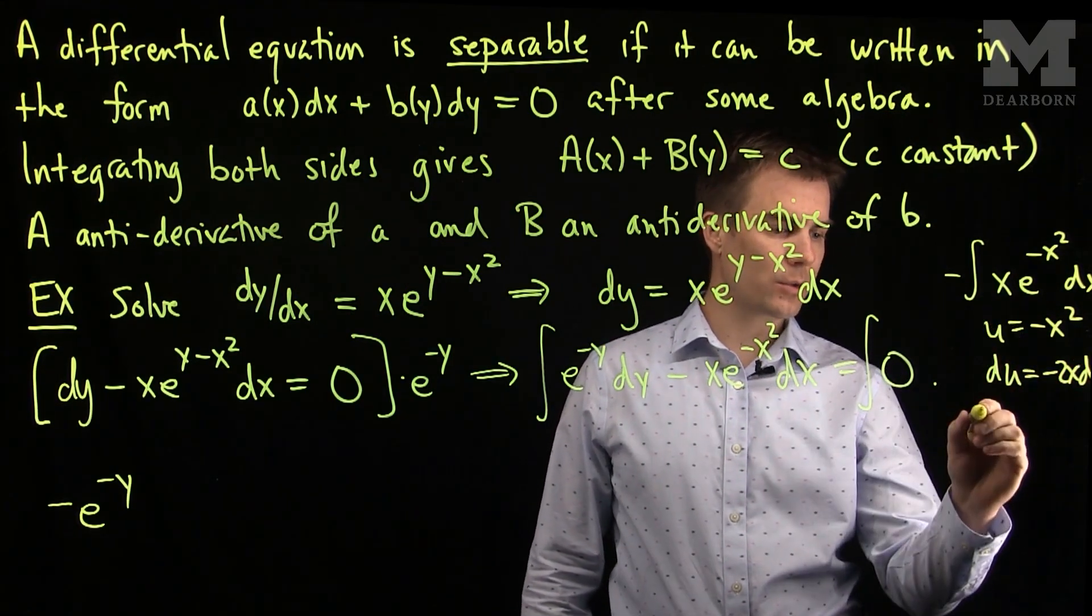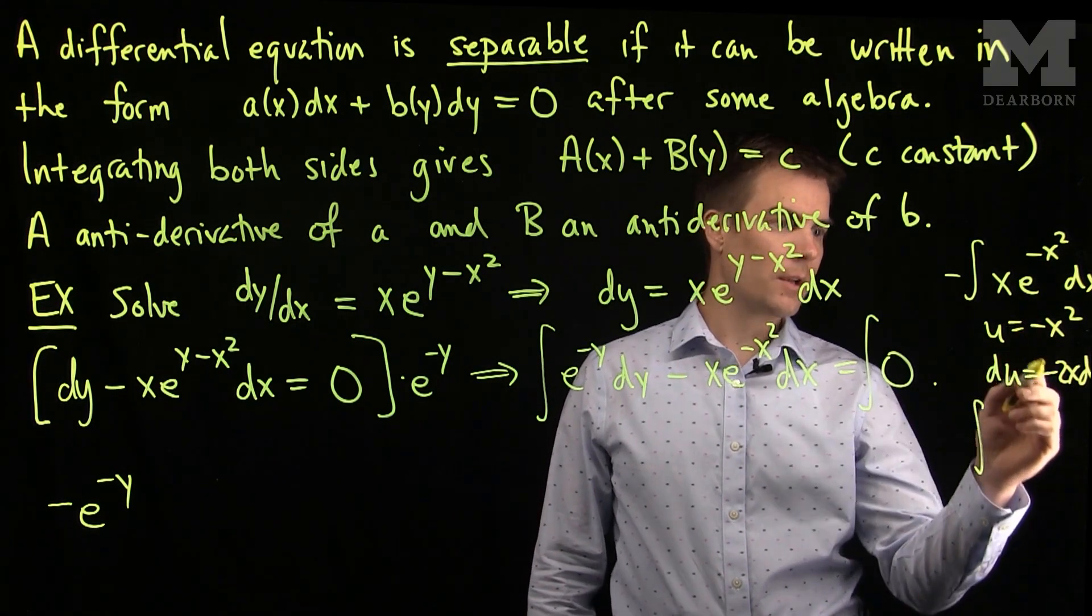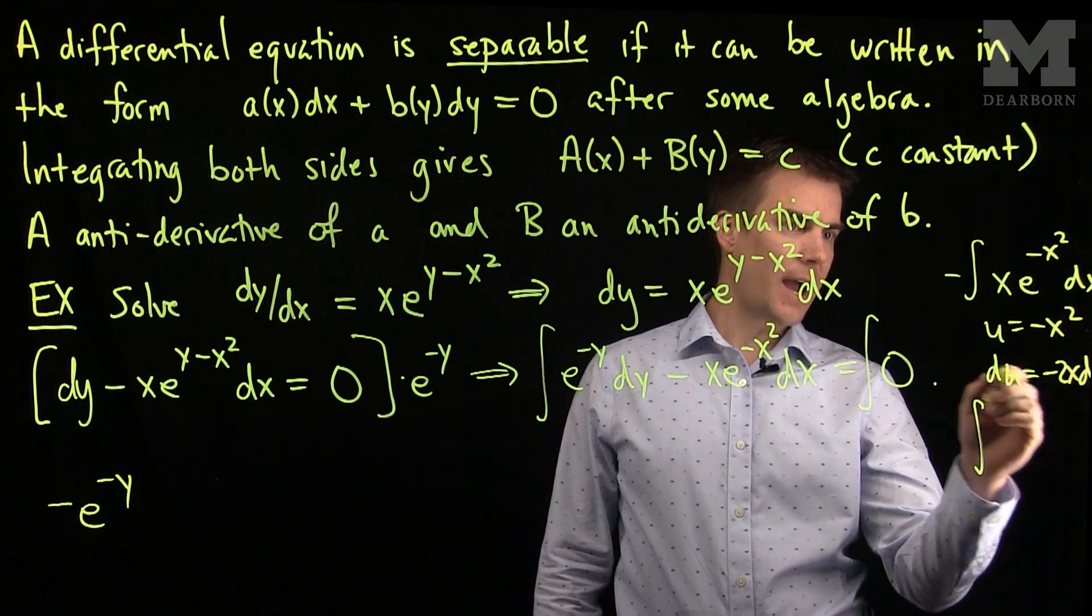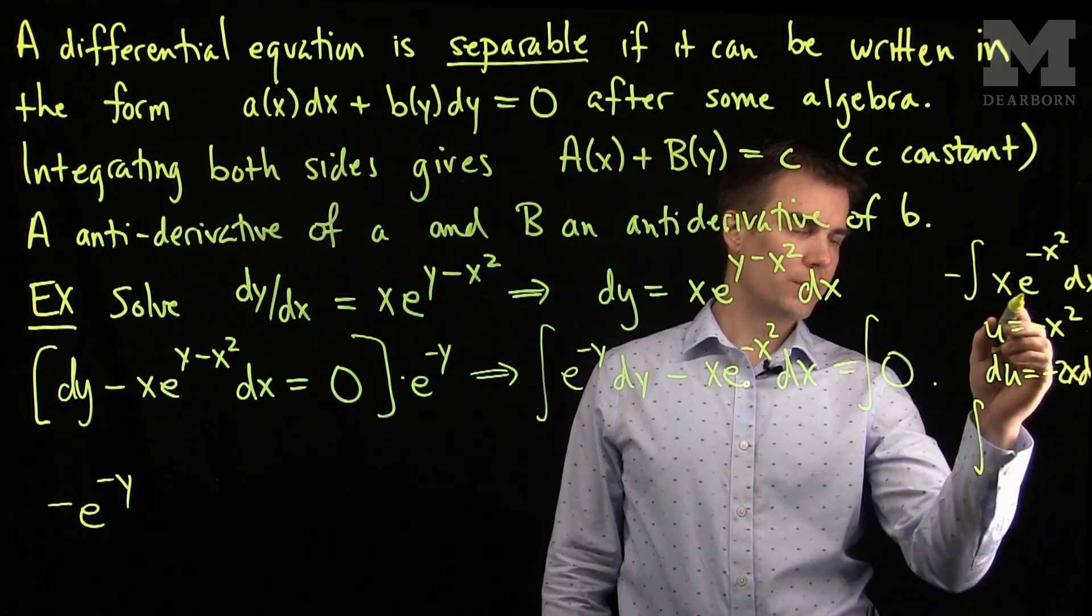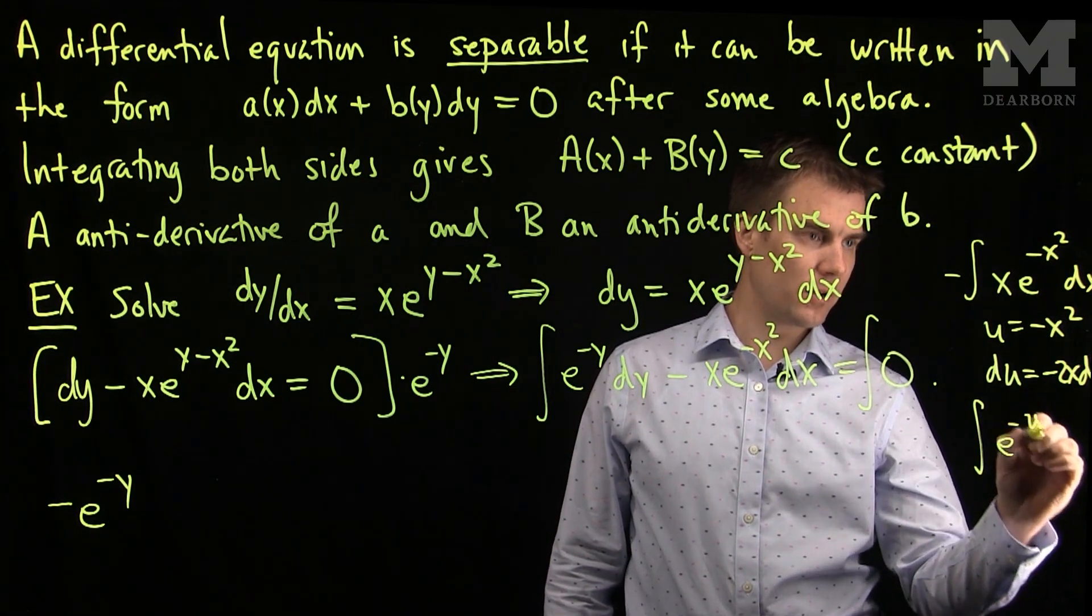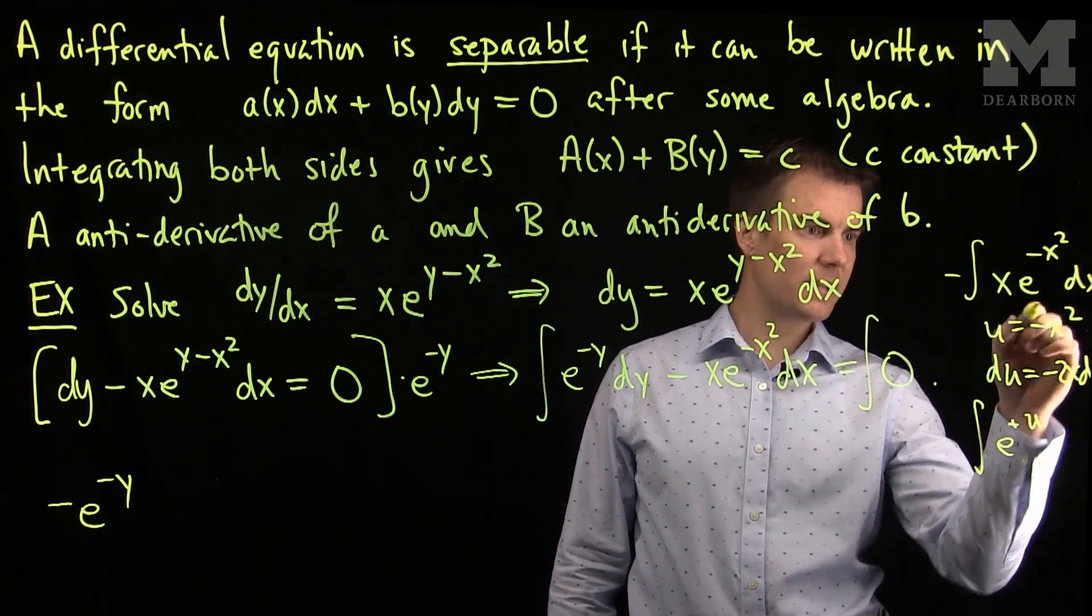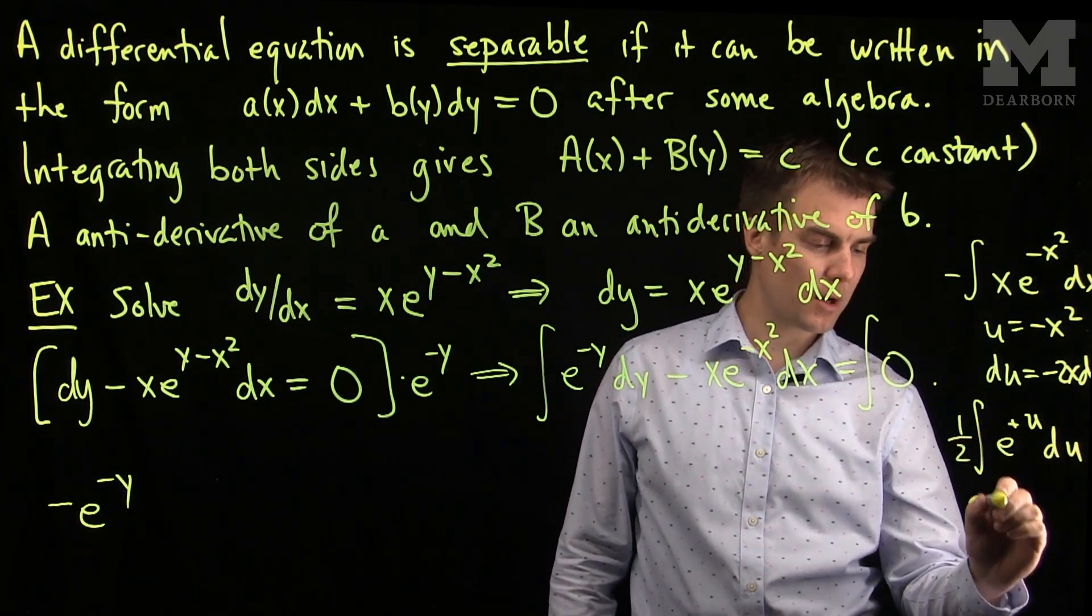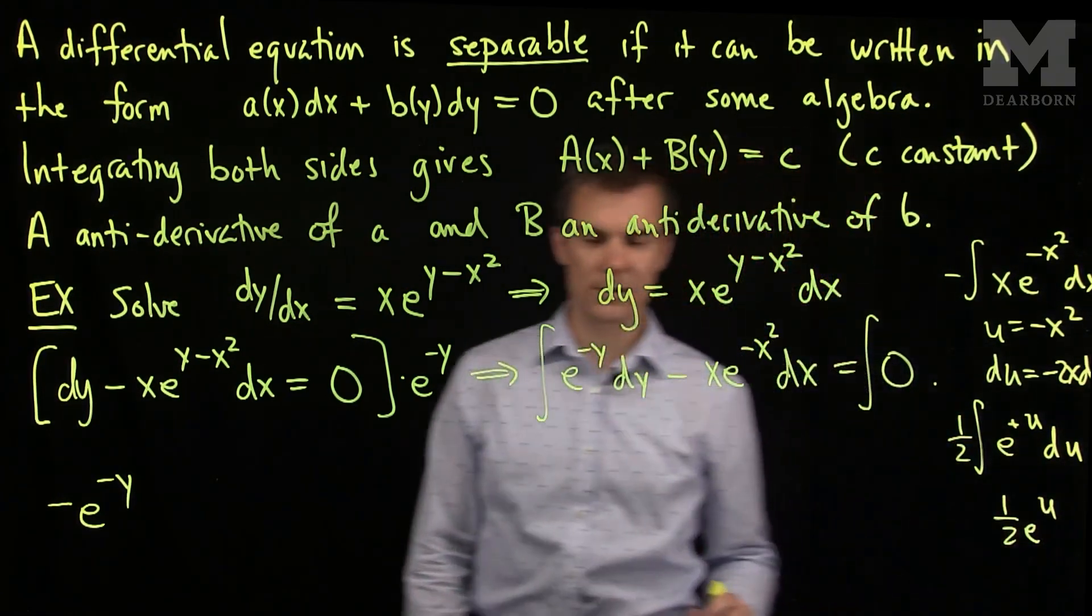And this integral will turn into the integral of what? Well, I have an x dx. So, x dx with a negative sign is du over 2. And this e^(-x²) will just be e^u, with a positive sign since I have a negative here, du with a one-half out in front. So, I just get one-half e^u is my answer.